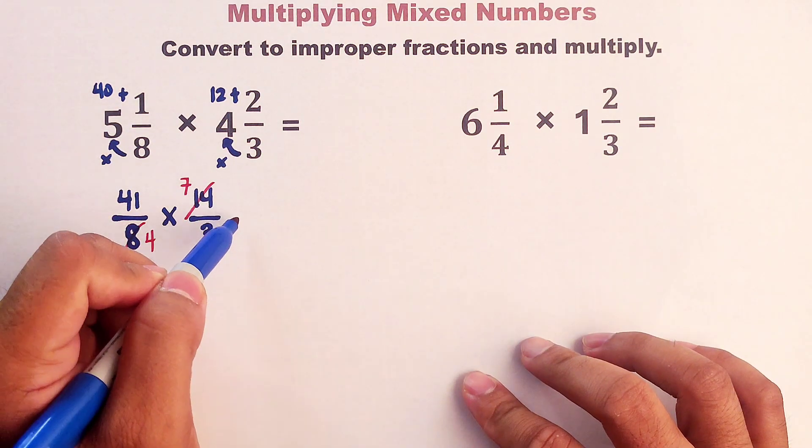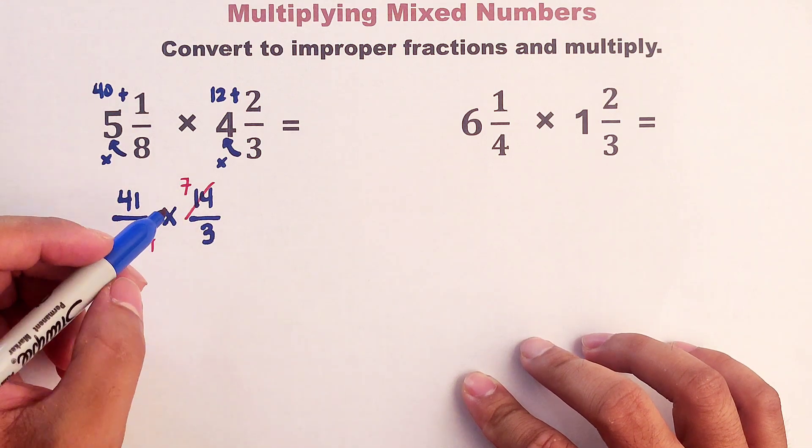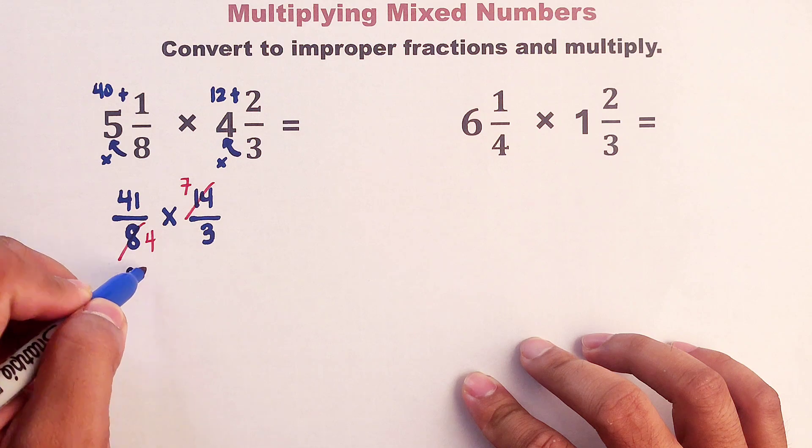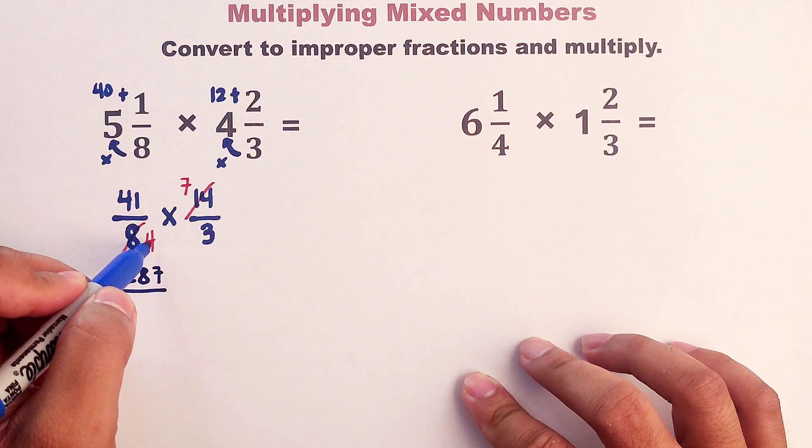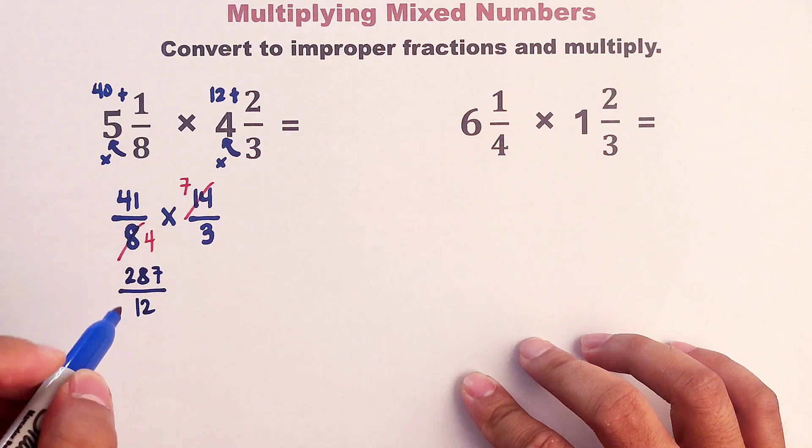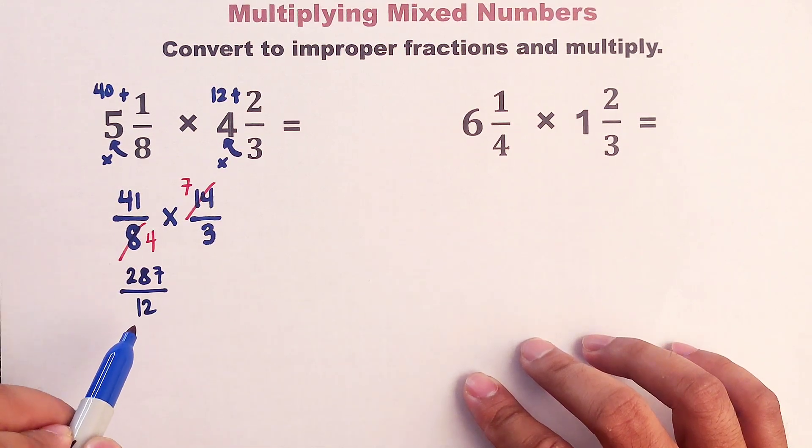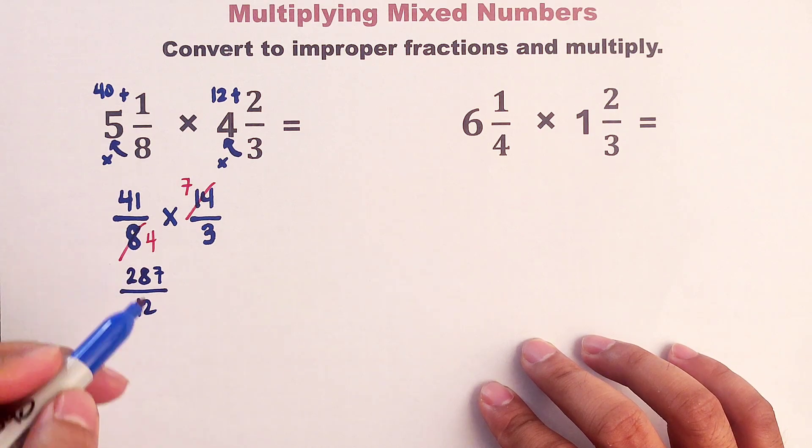So we have here 41 times 7. That would be equal to 287 over 4 times 3. That would be equal to 12. And now, our task here is that we need to convert this into a mixed number.